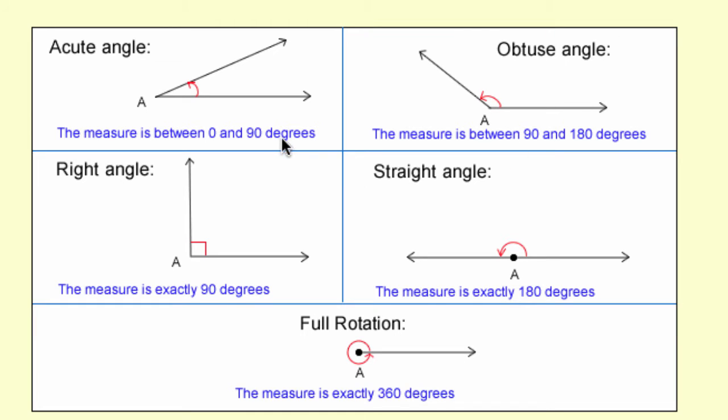Remember, acute angle is less than 90 degrees, obtuse is greater than 90 degrees and less than 180. Right angle is exactly 90 degrees, straight angle is exactly 180 degrees, and a full rotation is exactly 360 degrees.